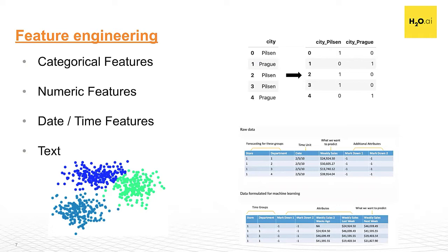We've got categorical feature engineering, numeric, date and time, as well as text — and there are also image-related feature engineering techniques. You'll hear about text and image later in Module 4, so if that's of interest I'd encourage you to keep coming. In Module 4 we'll start to address those specialty types and special cases.